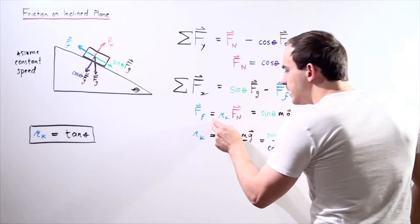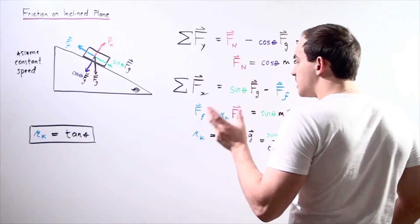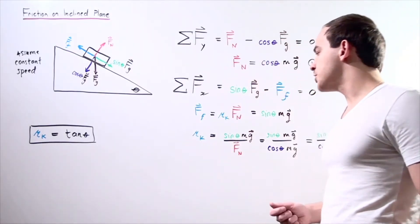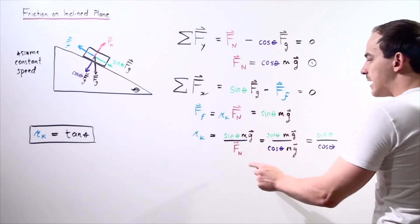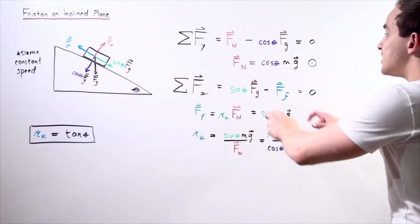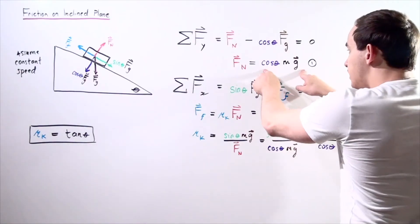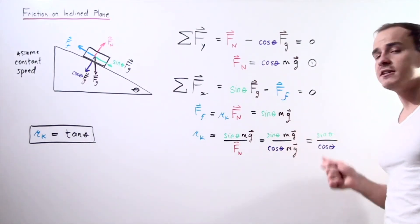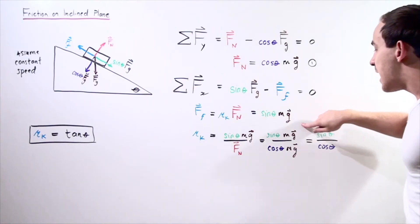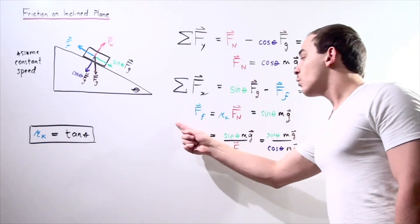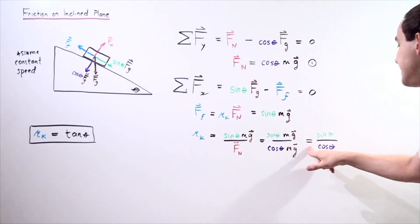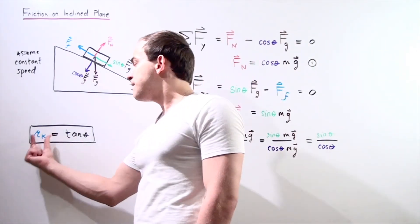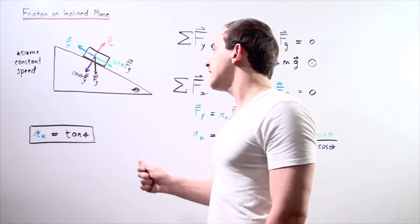Now let's bring mu-k, the coefficient of kinetic friction, to one side and everything else to the other side. The coefficient of kinetic friction equals sine of the angle theta multiplied by m times g, divided by our normal force. Substituting the normal force — which equals cosine(θ) times mg — we find that m times g cancels, and our coefficient of kinetic friction equals sine of the angle theta divided by cosine of the angle theta.